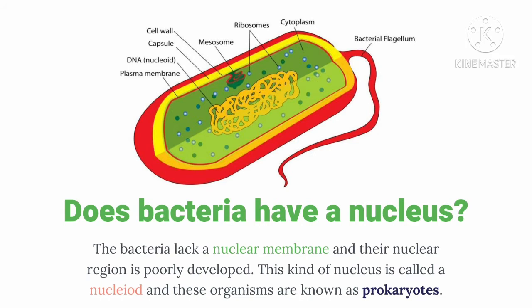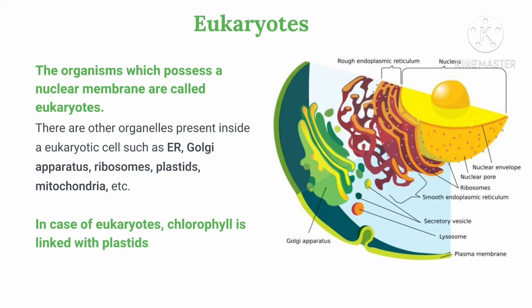Prokaryotes are primitive organisms and do not possess membranes in their organelles, and they sometimes lack certain organelles. The question is: does bacteria have a nucleus? Yes, they do possess a nucleus, but that nucleus lacks a nuclear membrane and the whole region is very poorly developed. This yellow colored region is a nucleoid. In case of prokaryotes or bacteria, the nucleus is known as nucleoid. In a bacterial cell, you cannot see endoplasmic reticulum or golgi complex — certain organelles are not present in a prokaryotic cell.